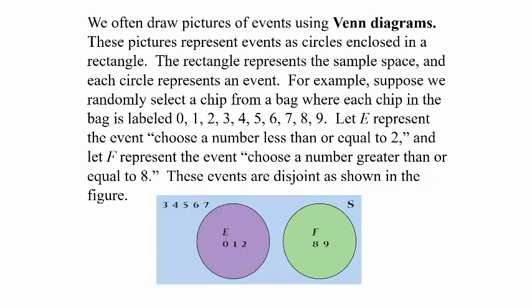We often draw pictures of events using Venn diagrams, which you might remember from a previous math course. These pictures represent events as circles enclosed in a rectangle. The rectangle represents the sample space, and each circle inside it represents a specific event.